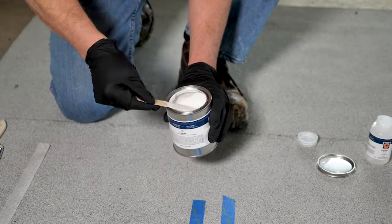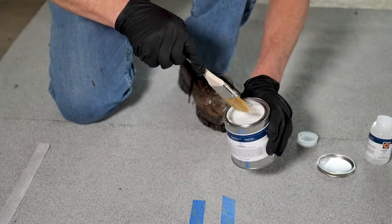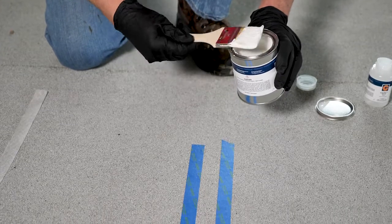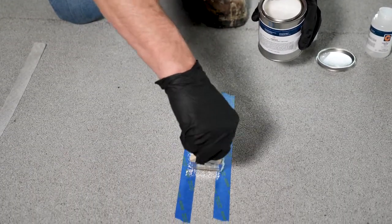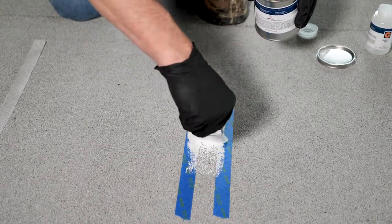After your minute of mixing, the catalyst will do its trick. Take your paintbrush that's included in the kit and apply a good healthy amount of product down, because you're going to need to embed your polyester fabric strip.